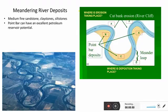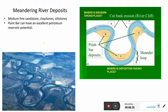Here is another depositional environment: meandering river deposits. The important feature is the point bar, as you can see in the figure on the right showing three different positions of point bars. Point bars consist of medium to fine sandstone with minor claystone and siltstone. Point bars are also important for petroleum exploration and can have excellent petroleum reservoir potential.